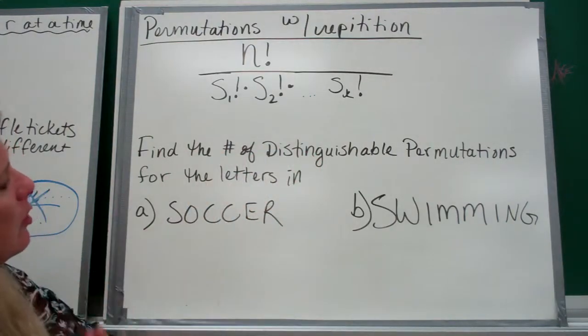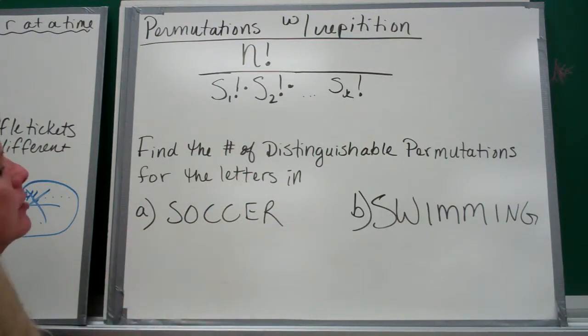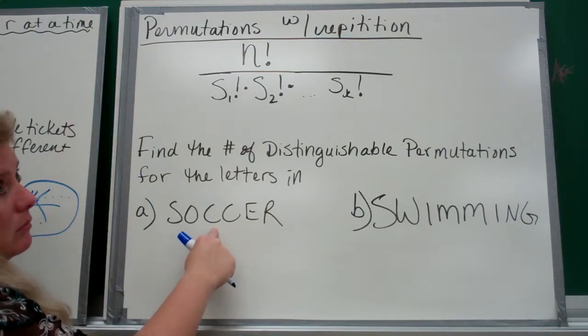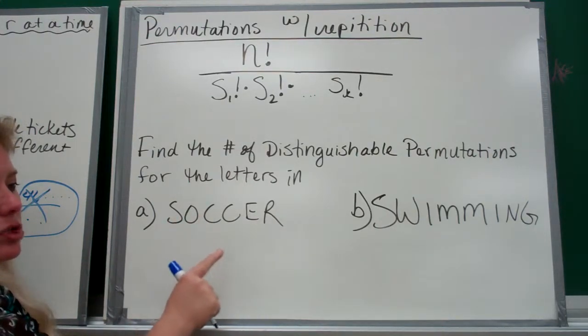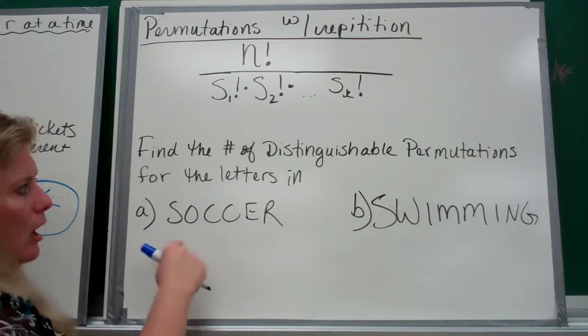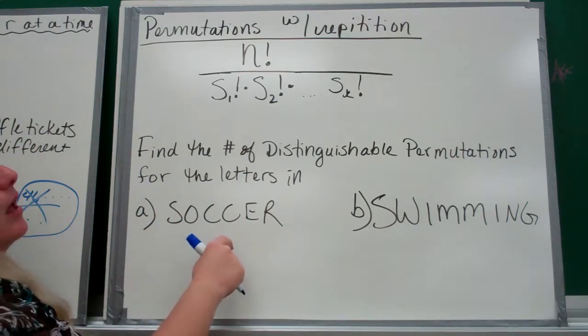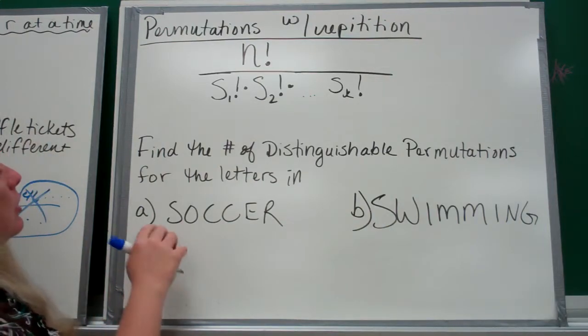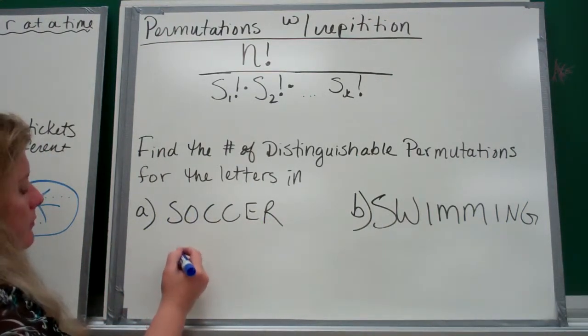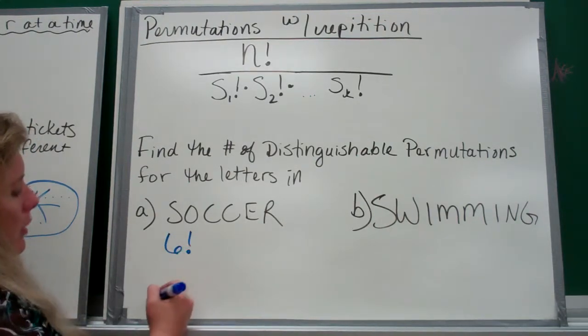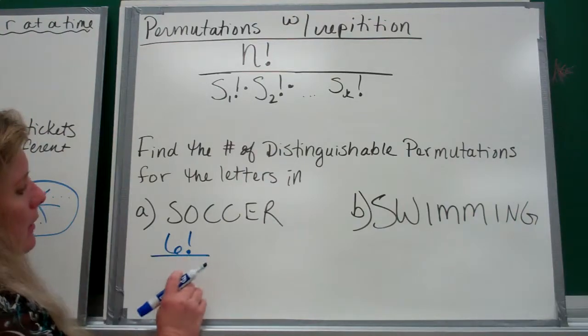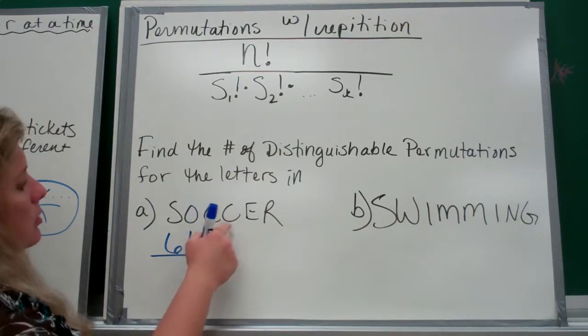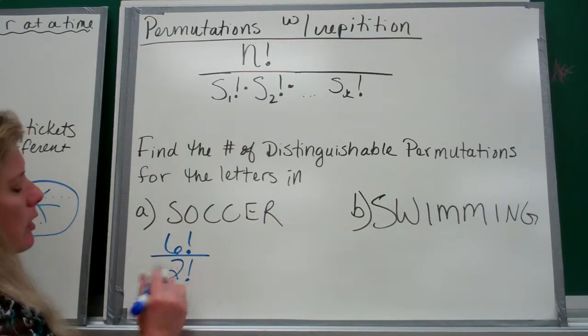Find the number of distinguishable permutations for the letters in SOCCER. There's two C's in here. Because I have the repeats, something could change. I could get a different permutation of these six letters. But since C repeats, I have to represent that some way to divide it out. There are six letters all together, so that's going to be your numerator. And then there is one letter, which is C, that is repeated twice, so it's there two times. So it's going to be 2 factorial that we're going to divide by.